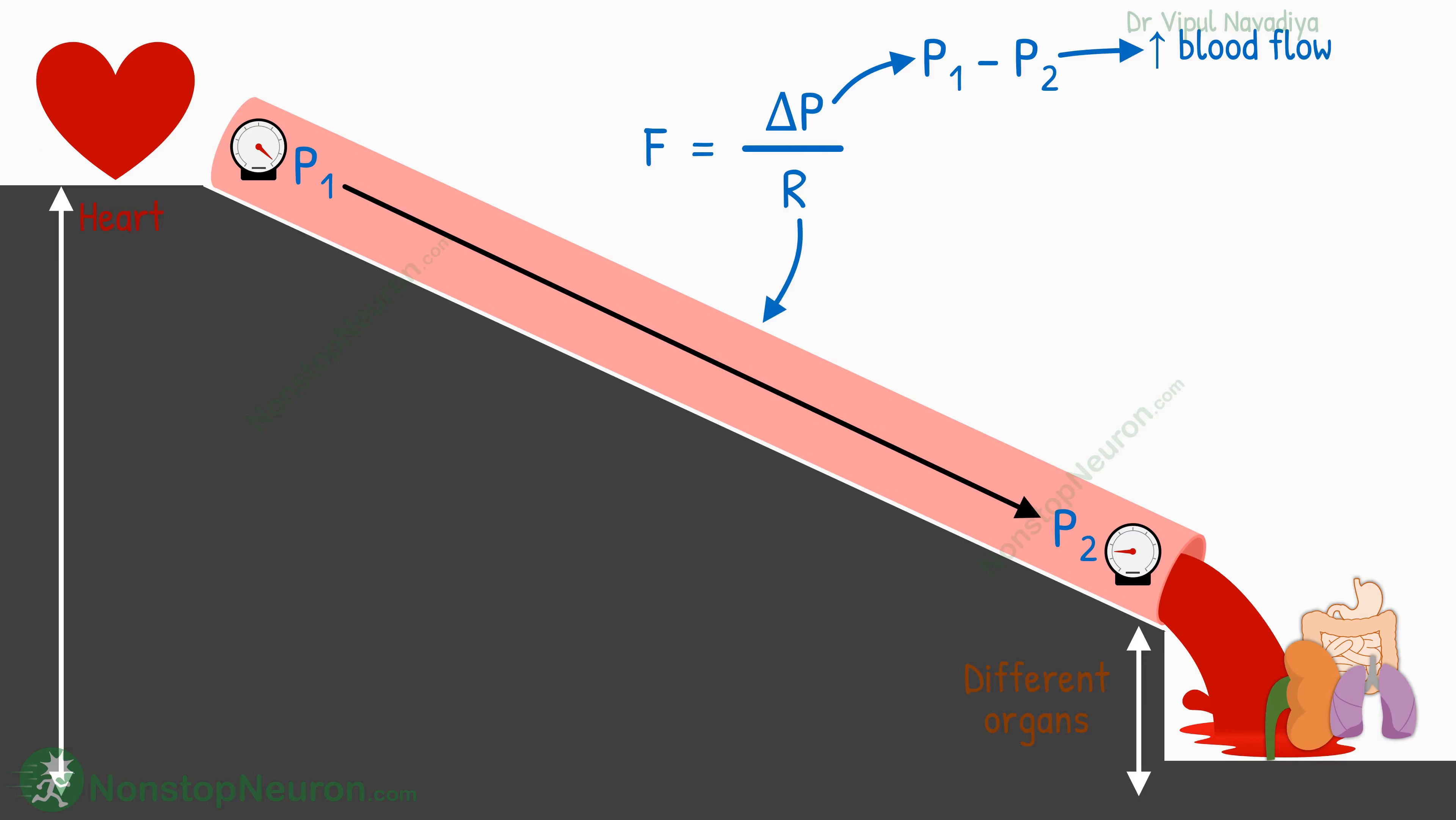And regarding resistance, any opposing force, like vasoconstriction, decreases the flow. So the more the resistance, the less would be the blood flow. So resistance in the denominator tells you that he decreases blood flow.